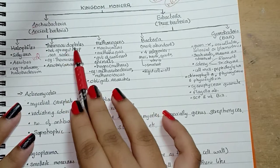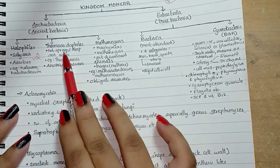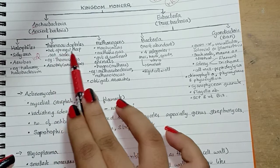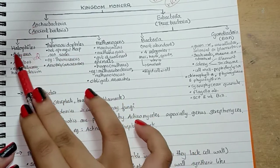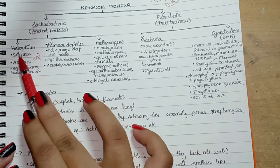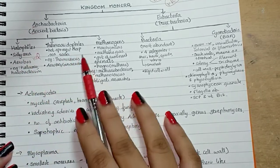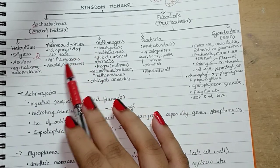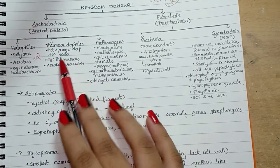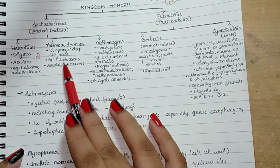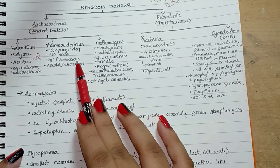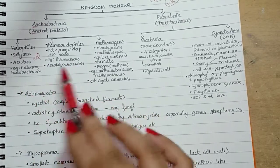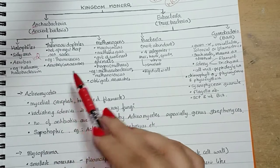Then we have thermoacidophiles, which live in hot springs or deep sea water. 'Thermo' means hot, so they live in hot springs or deep sea water. Examples are thermococcus. They can be aerobes or anaerobes.